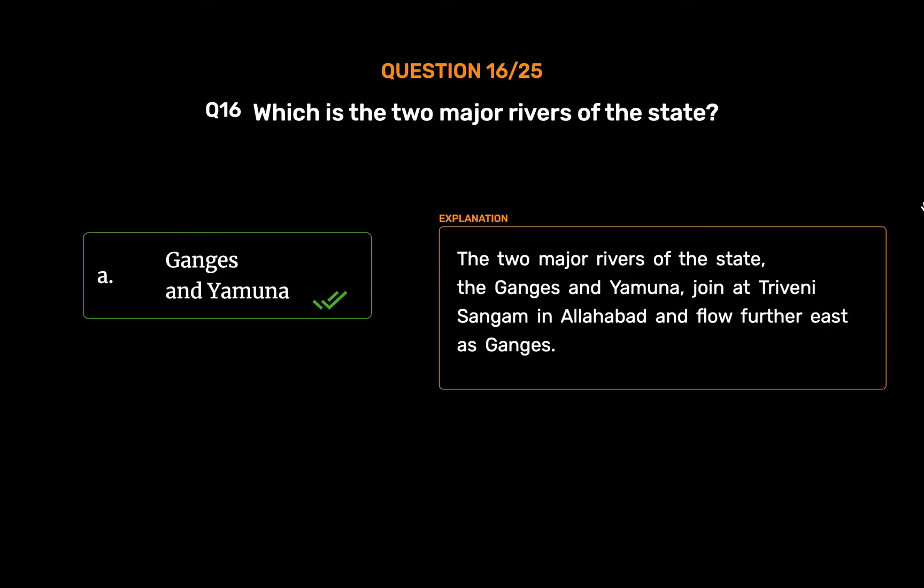The two major rivers of the state, the Ganges and Yamuna, join at Triveni Sangam in Allahabad and flow further east as the Ganges.